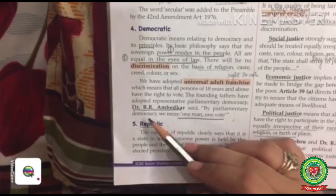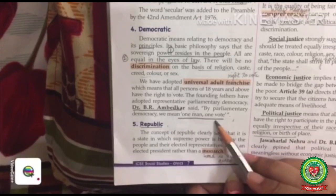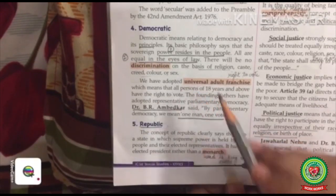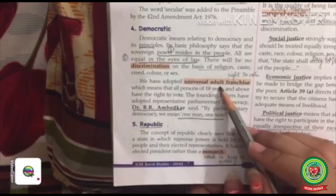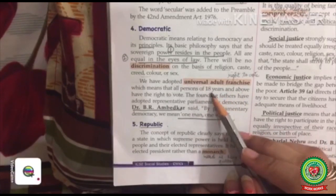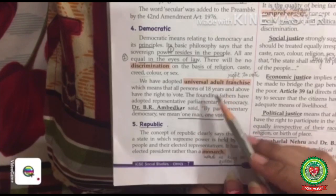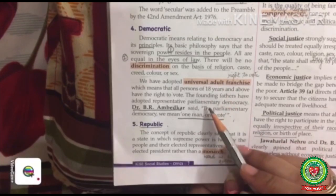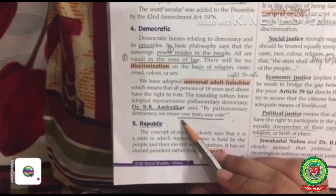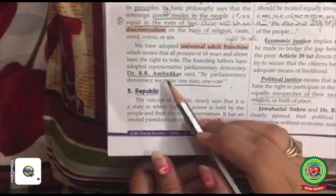The founding fathers have adopted representative parliamentary democracy. Dr. B.R. Ambedkar said, by parliamentary democracy we mean one man, one vote. It means our country has universal adult franchise — all people who are 18 years of age or above have the right to vote. Under parliamentary democracy, one man can give one vote.